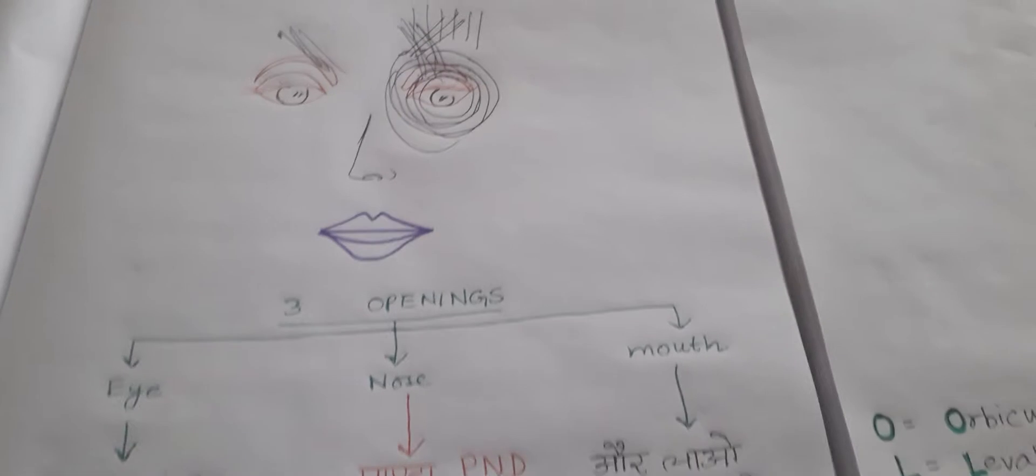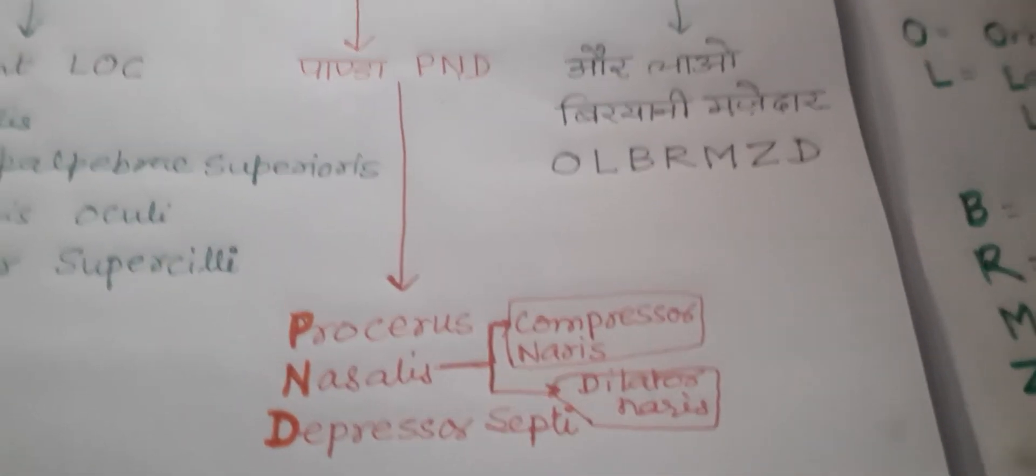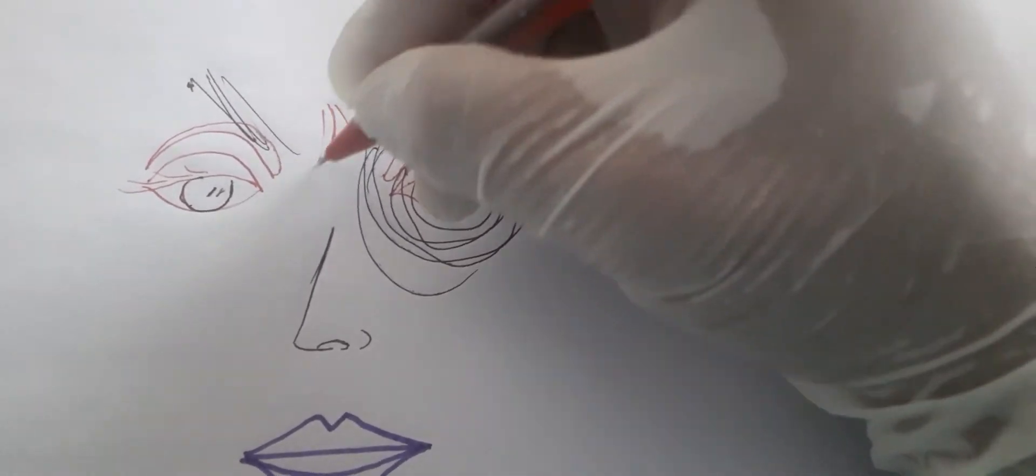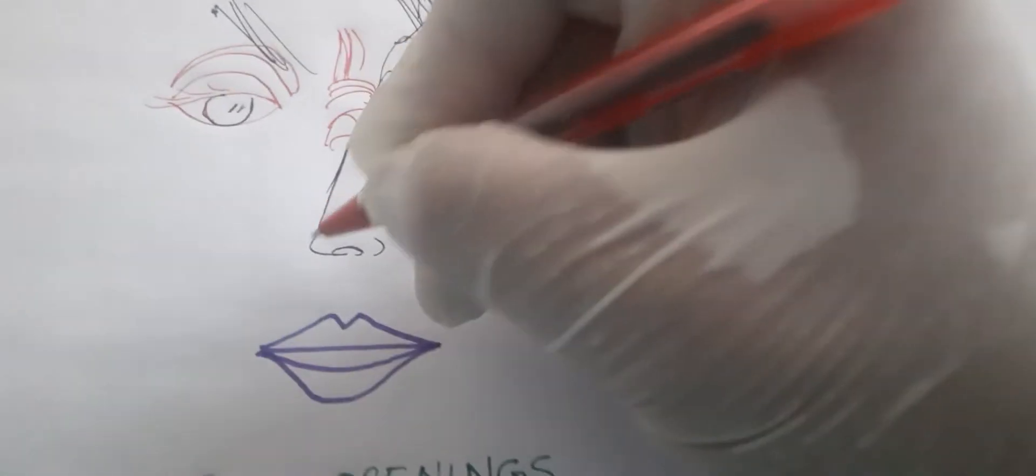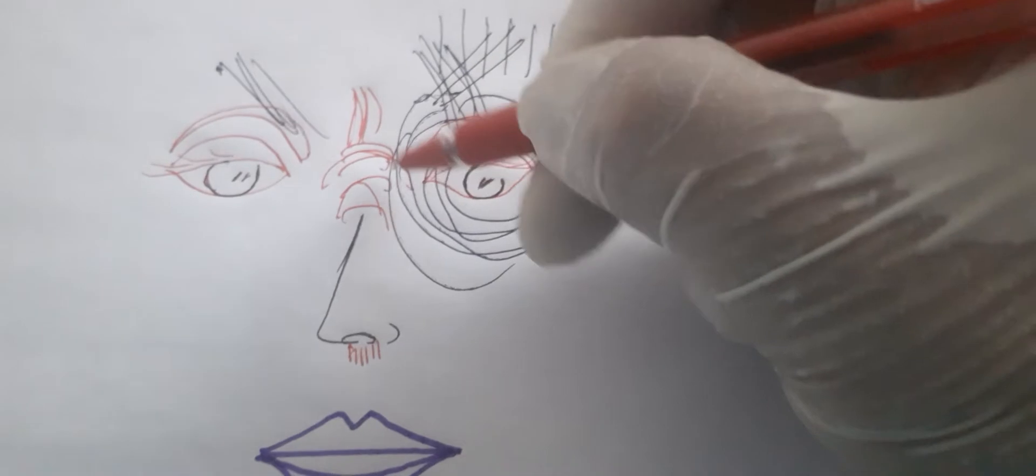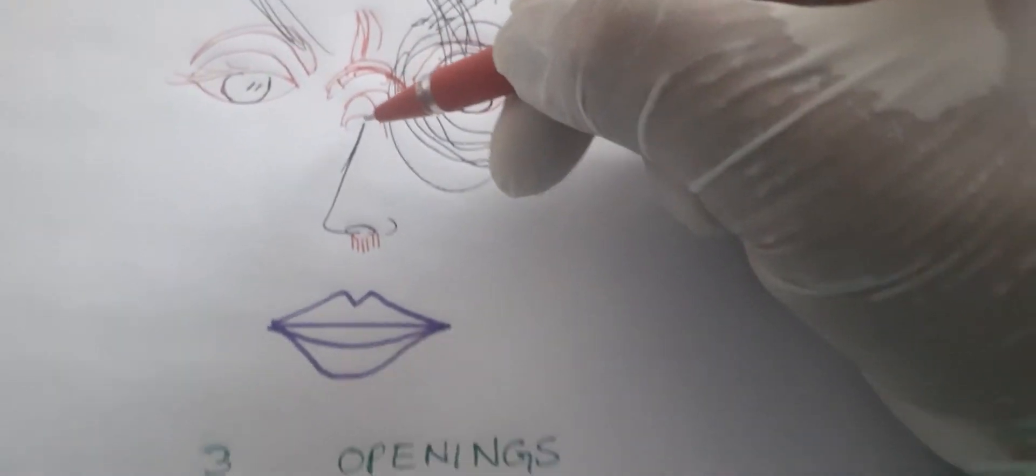Just look at where exactly it is. Procerus - here lies the procerus. Nasalis - here is the nasalis and here is depressor septi. The nasalis - here is the dilator naris and this is compressor naris.